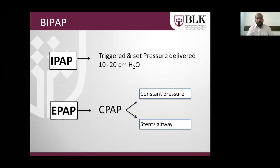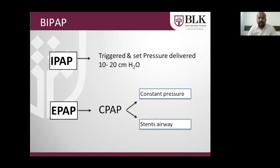BiPAP is bi-level positive airway pressure. It has two components: one is inspiratory positive airway pressure, which is IPAP, and an expiratory positive airway pressure, which is EPAP. IPAP is triggered by the patient and once triggered, a set pressure is delivered, ranging from 10 to 20 centimeters of water. EPAP is similar to CPAP and provides a constant pressure through inspiration and expiration, helping keep the airway stented.